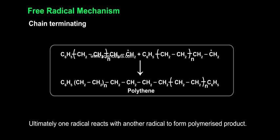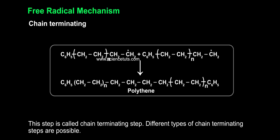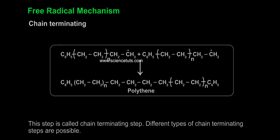Ultimately, one radical reacts with another radical to form the polymerized product. This step is called the chain terminating step. Different types of chain terminating steps are possible.